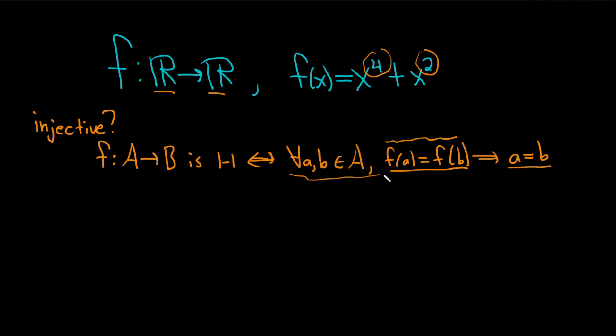You see, for it to be injective, this has to be true for all a, b. For it not to be injective, you just have to find a single example where it failed. So I'm thinking it's not going to be injective simply because of the even exponents. So watch this.